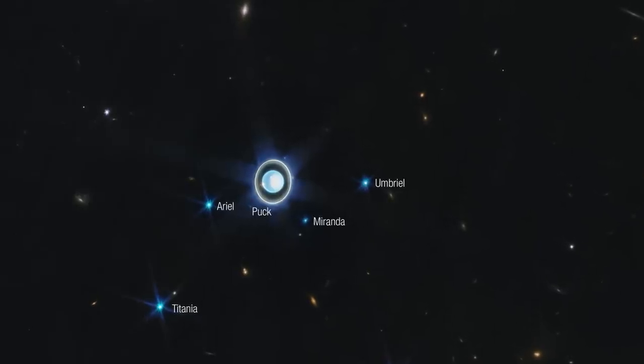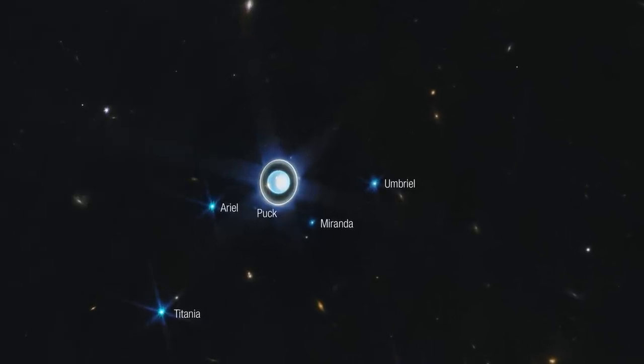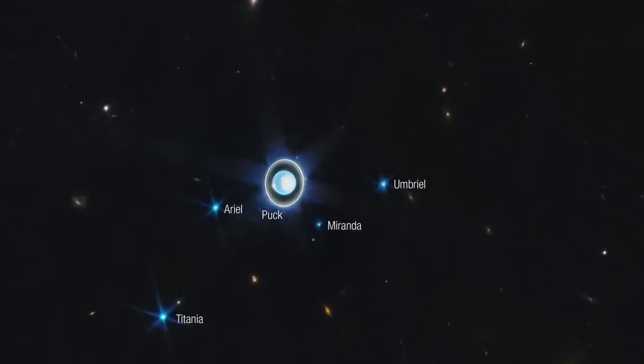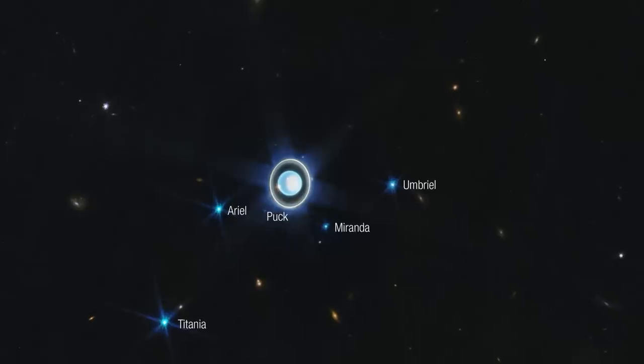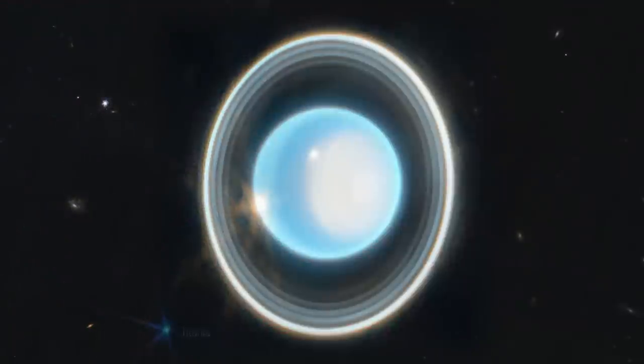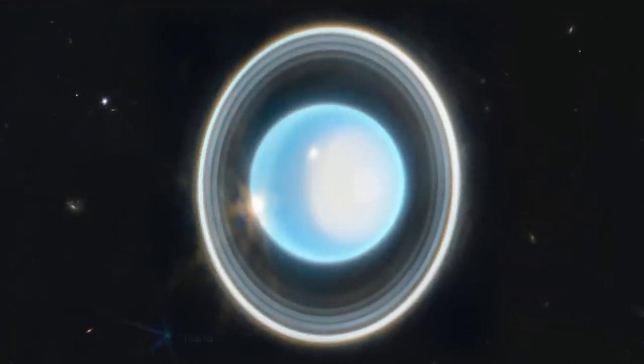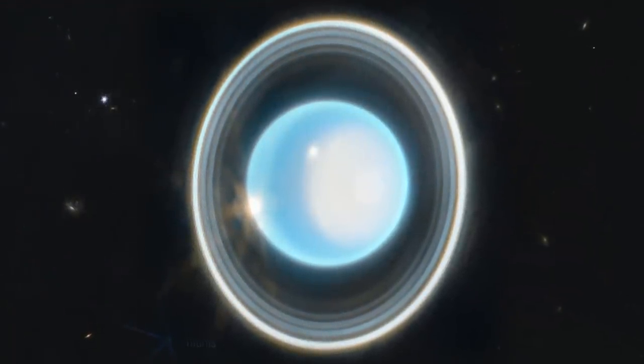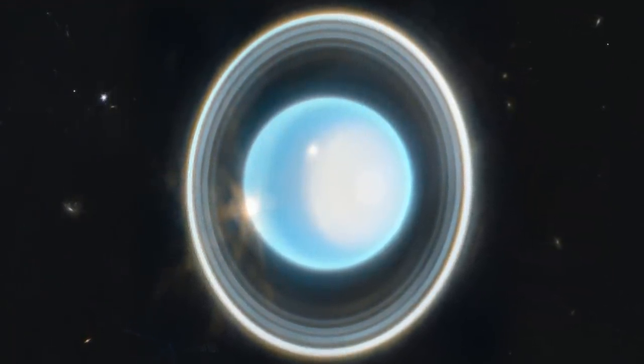But that's not all. Following the Neptune image released in 2022, the James Webb Space Telescope took what might be the clearest image of Uranus ever taken. In the zoomed-in image, you can see 11 of the 13 known rings around the planet, and you can also see the planet's northern pole.